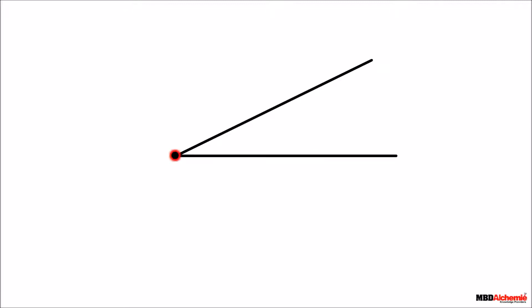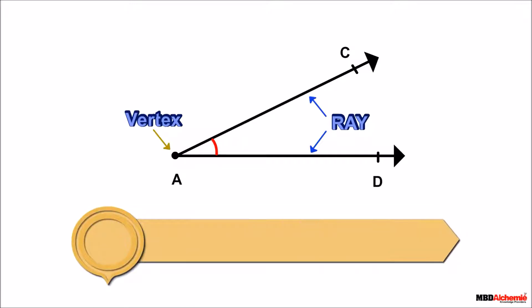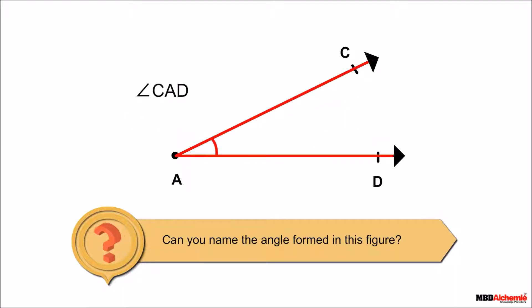Let's plot a point and draw two rays with the same point in different directions. Then we get an angle. A figure having two rays and one common point is called the vertex of an angle. The name of the angle formed in the figure is angle CAD or angle DAC.